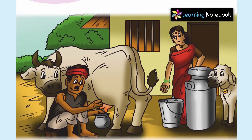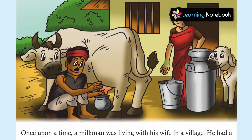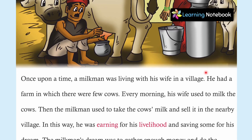Now friends, we are going to start with the chapter. Once upon a time, a milkman was living with his wife in a village. He had a farm in which there were few cows.